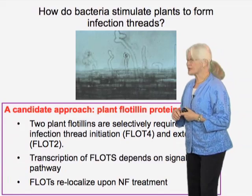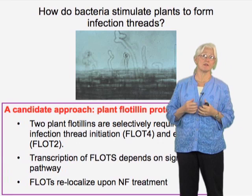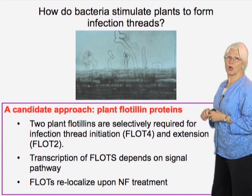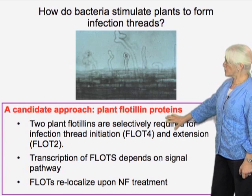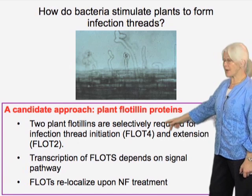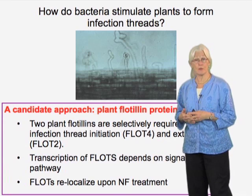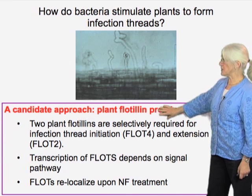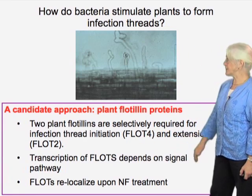We wanted to ask how the inside of the plant cell copes with the invasion of the bacterium, and how it reorganizes itself. We decided to take a look at some candidate genes called flotillins. These are genes originally identified in animals. There are two copies of flotillin specifically upregulated in nodules; their transcription is regulated along with other nodulation genes; they are required for infection and for elongation; and the proteins have very striking localizations that we believe relate to the mechanism of infection.